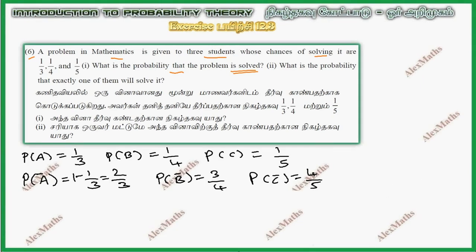Subdivision 2, what is the probability that exactly one of them will solve? So exactly one of them will solve. So if A has to solve, that B and C will not solve. So A solves, B bar and C bar.